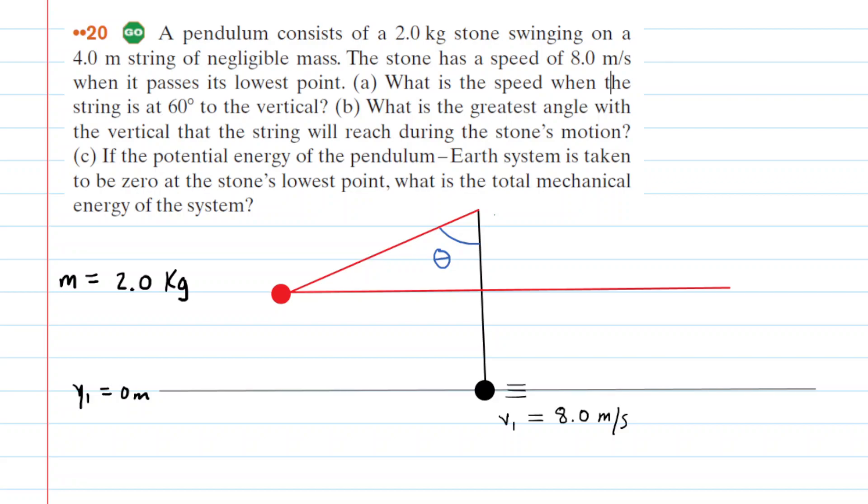In this question we have a pendulum bob that is swinging back and forth. We know that at the lowest point of its trajectory the speed is 8 meters per second. We've called that lowest point of the trajectory a baseline height of 0 meters. You can think of that as being at the ground level. We've called that height y sub 1 is equal to 0 meters.